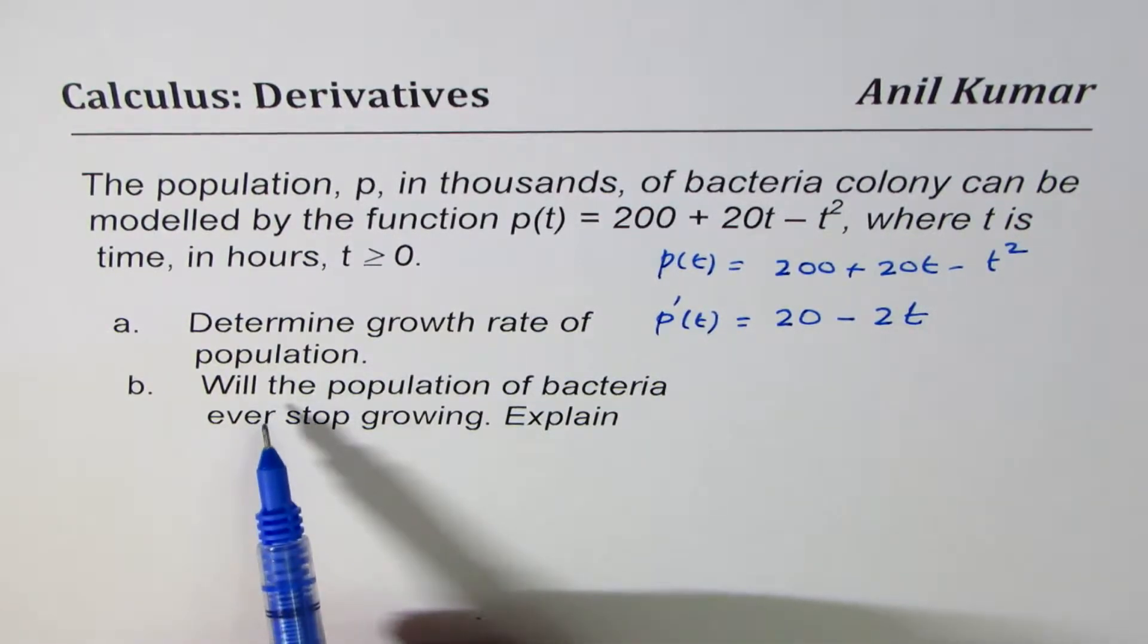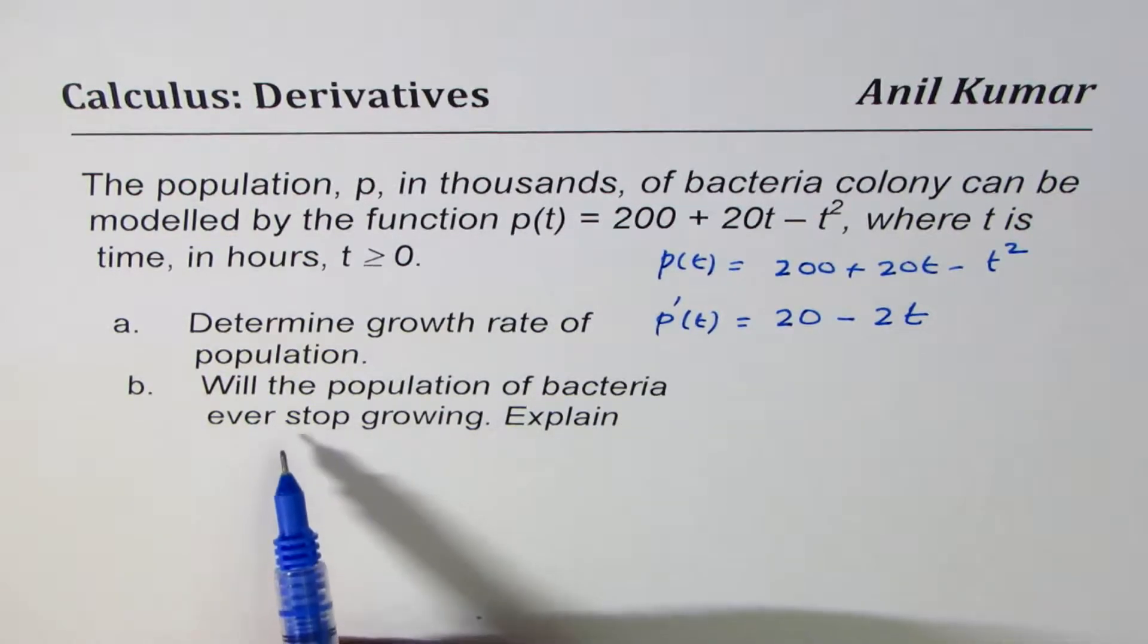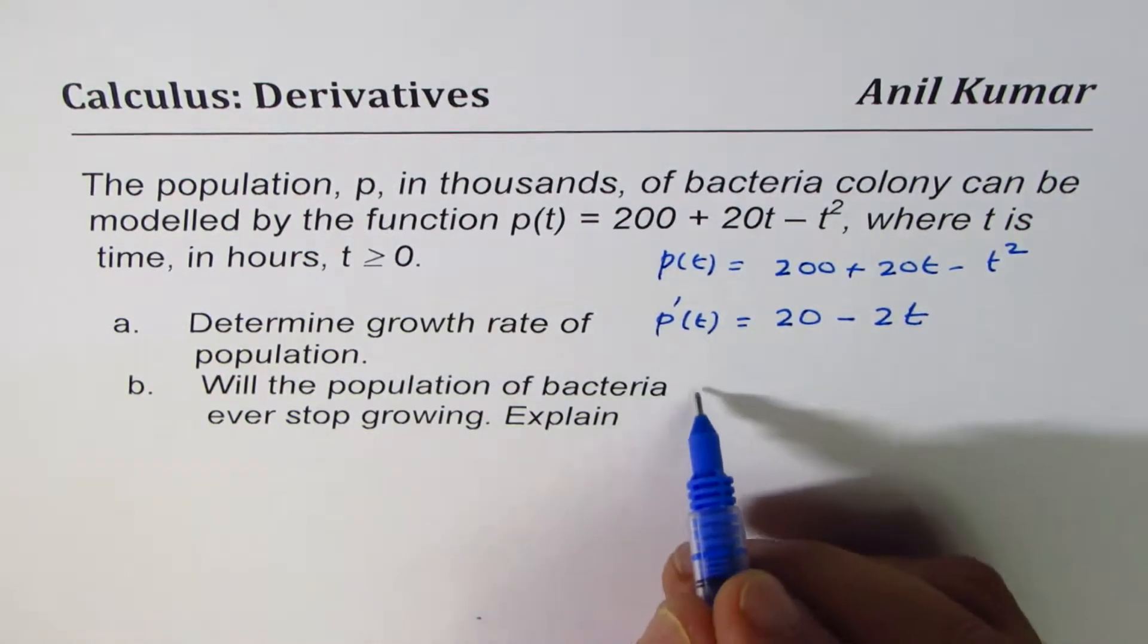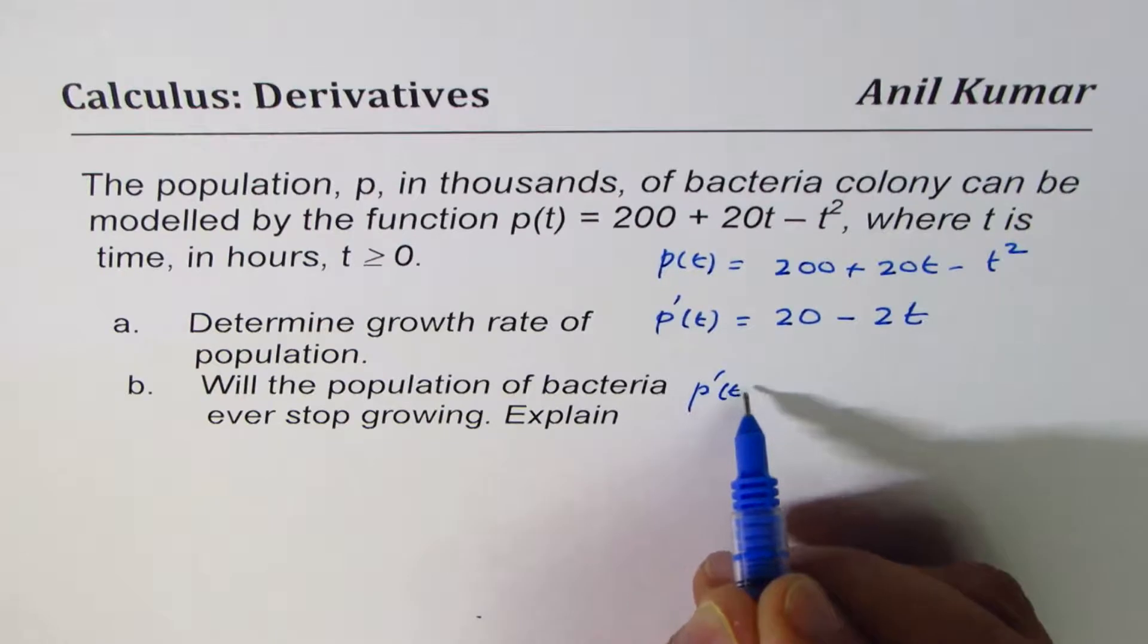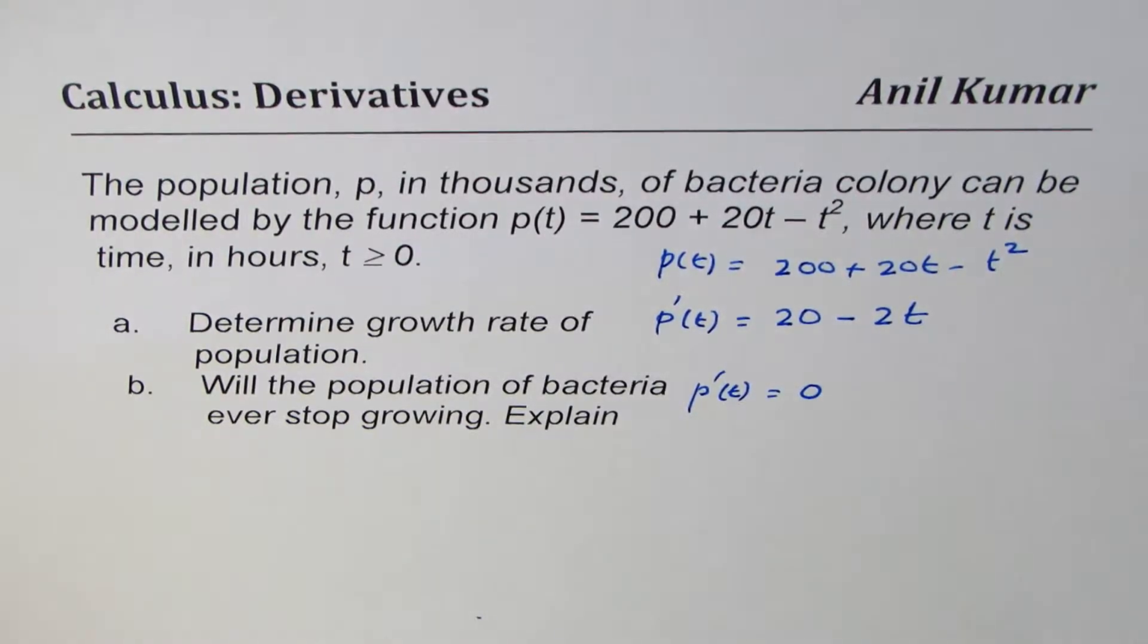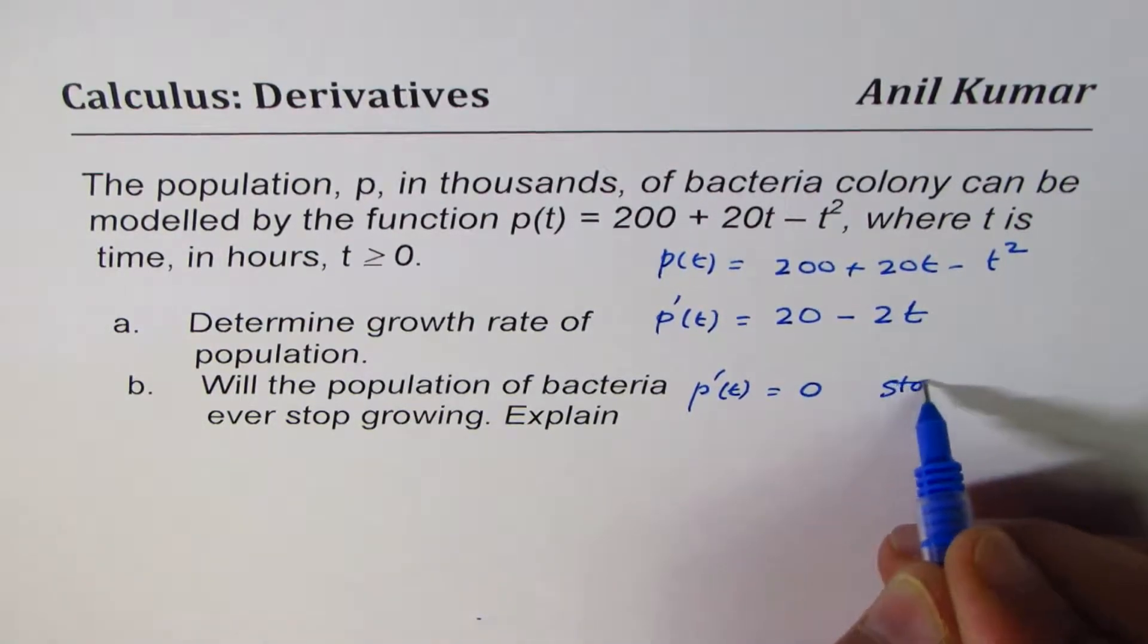Part B is, will the population of bacteria ever stop growing? That really means if this becomes 0, that means the population stops growing.